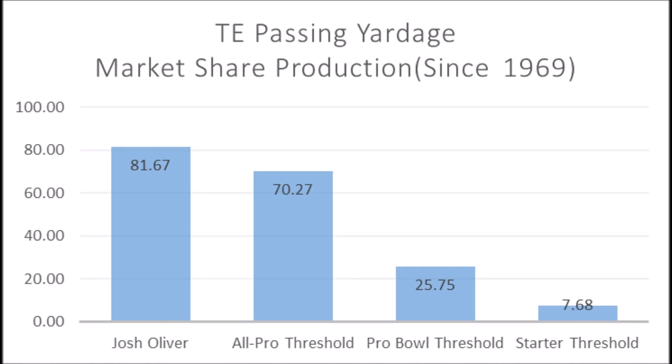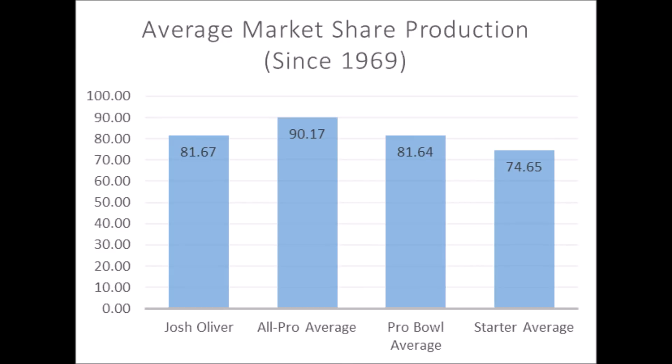In terms of his production profile, he had an 81.67 market share production score, compared to the all-pro threshold of 70.27, the pro bowl threshold of 25.75, and the starter threshold of 7.68. He pretty much hits above all those thresholds, and when you look at the averages at the position, his production falls in that pro bowl to starter range overall.